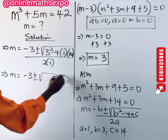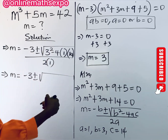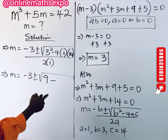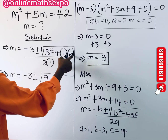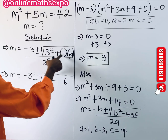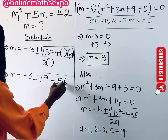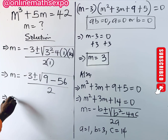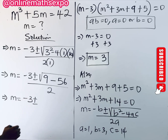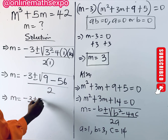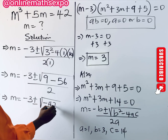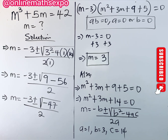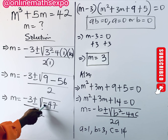Simplifying: 3 squared is 9. Then 4 times 1 times 14 gives us 56. So inside the square root we have 9 minus 56, which equals negative 47. Therefore m equals negative 3 plus or minus square root of negative 47, all divided by 2.